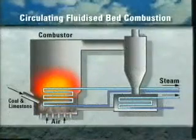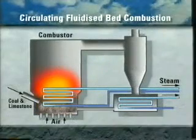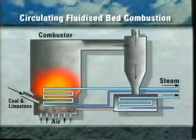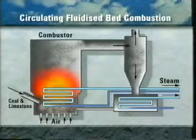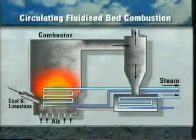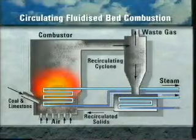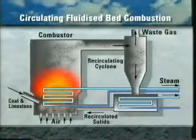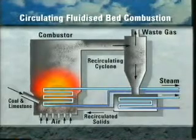In circulating FBCs, CFBCs, high-velocity flue gases circulate limestone and unburnt solids through to cyclones, where they are separated from the gas and recycled to the combustion chamber.